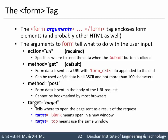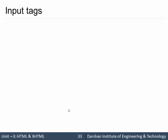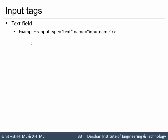Next is the target attribute. We can set targets — for example, target equal to blank means when we click the button and send the data, the output will open in a new tab. If you specify target equal to underscore top, the data will be sent to the same window.